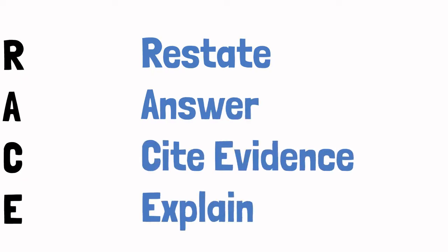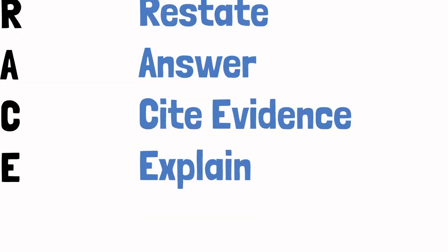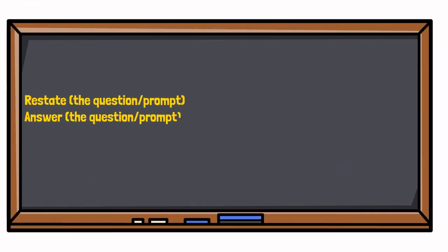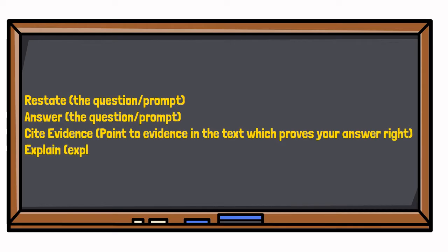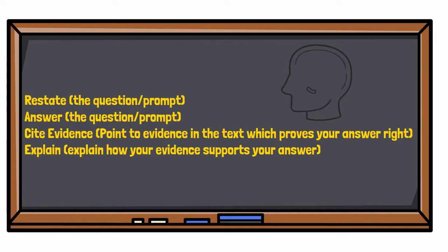The acronym and memory helper RACE stands for: Restate, Answer, Cite Evidence, and Explain. Another way to think about it is: restate the question or prompt, answer the question or prompt, cite evidence — which means to point to evidence in the text which proves your answer correct — and then finally explain, which is explaining how your evidence proves your answer correct.